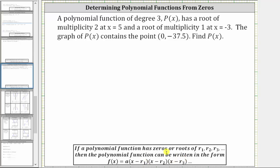Because we have a degree three polynomial function, we will have three binomial factors. Our polynomial function will be in the form p(x) equals a times the quantity x minus r₁, times the quantity x minus r₂, times the quantity x minus r₃.